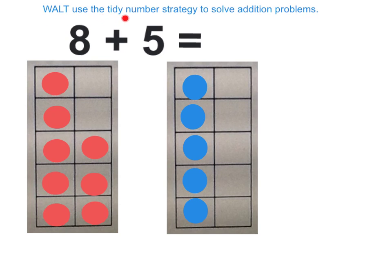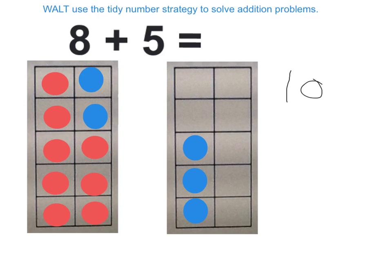We are learning to use the tidy number strategy to solve addition problems. My problem to solve is 8 plus 5 equals what? To solve this problem, I'm going to take 2 from the 5 to give 2 to the 8 to make a 10. So 10 plus 3 equals 13.